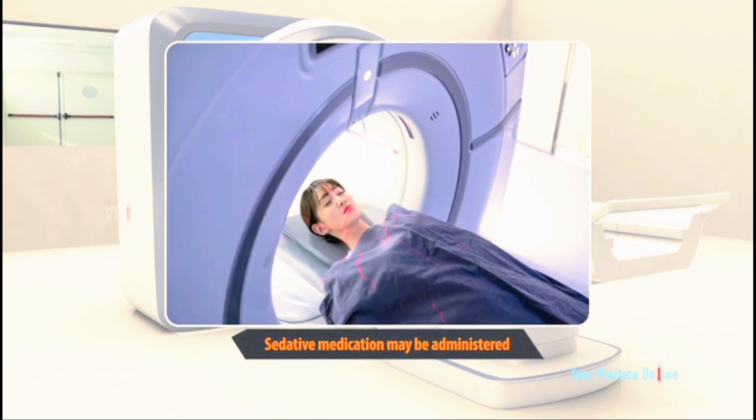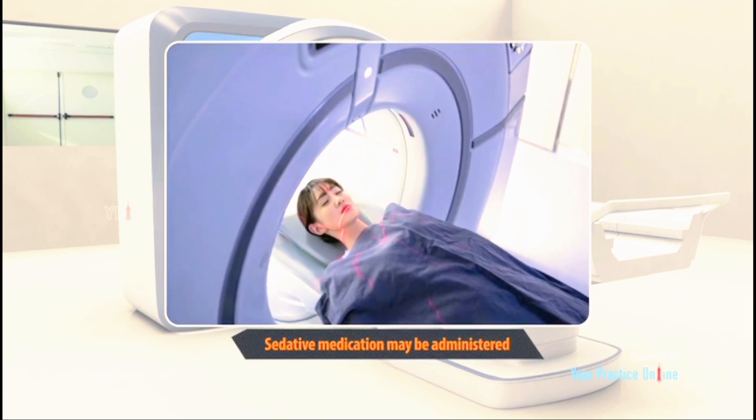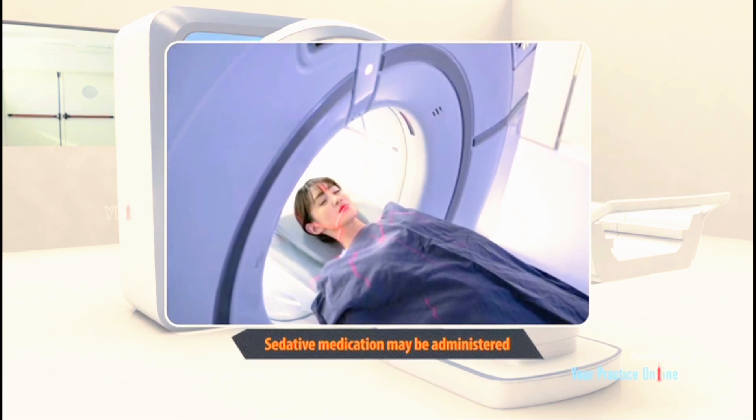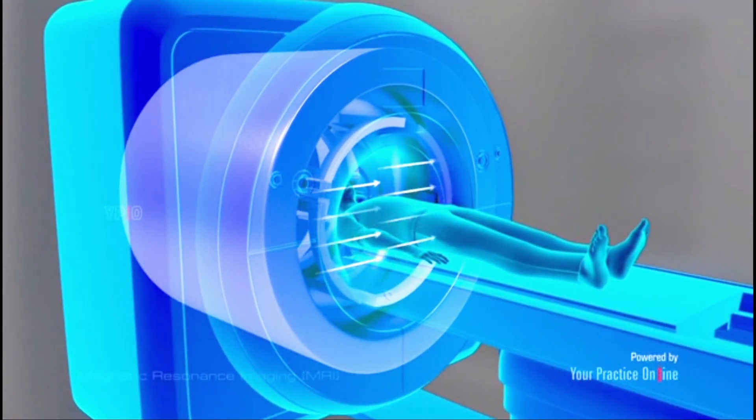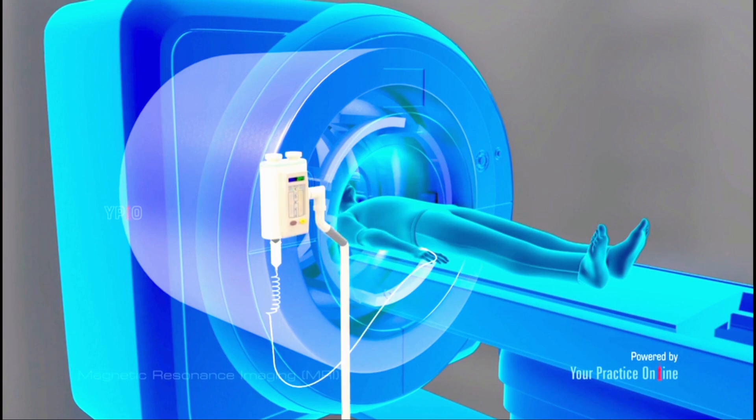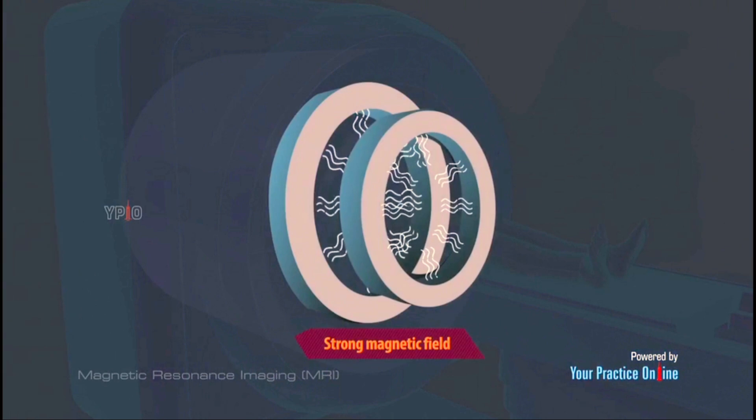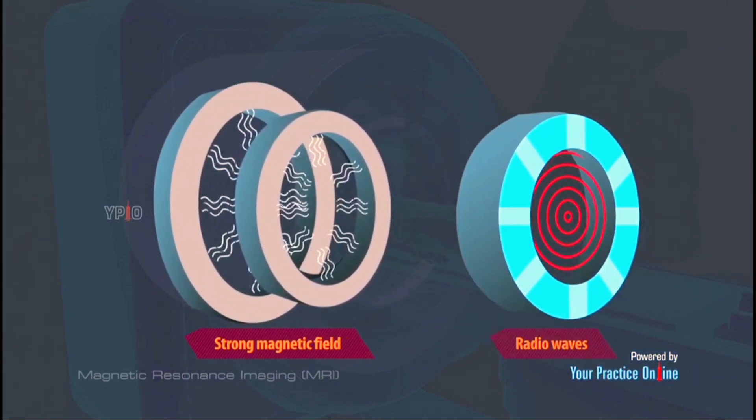If you are claustrophobic, sedative medication may be administered to keep you calm during the procedure. A contrast dye, usually gadolinium, may be injected to improve the visualization of certain structures. The MRI machine generates a strong magnetic field and radio waves.